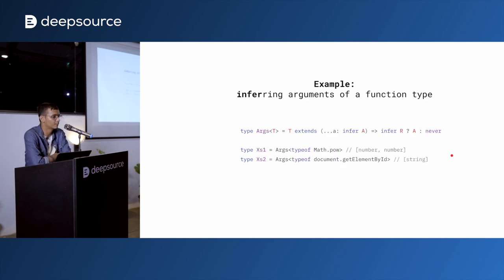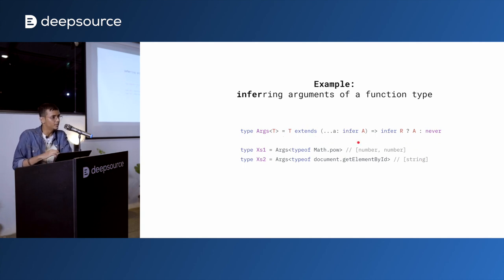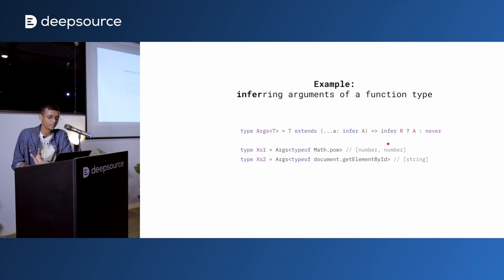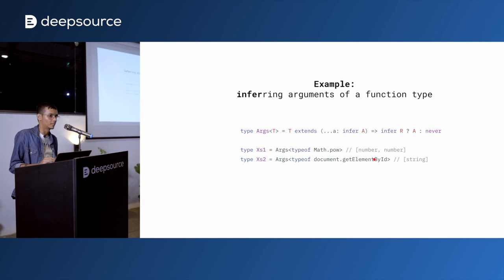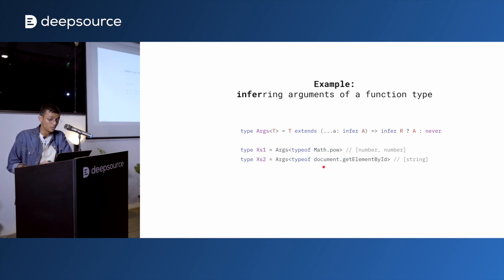Here's a more useful infer example that we actually use in one of our code bases. The Args helper takes a type parameter T and checks if T can be deconstructed into a function with argument list of type A and return value of type R. If possible, it returns the type of the argument list A, otherwise never. So Args<typeof Math.pow> gives [number, number], and Args<typeof document.getElementById> gives a tuple type with a string inside it.